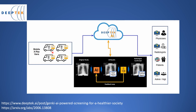The idea is that you have X-rays or mobile X-ray vans where X-rays of patients are taken. These X-rays are then uploaded onto a cloud where AI algorithms are running. The AI algorithms from DeepTek detect certain abnormalities present in these X-rays and then create an automated report. This report can then be viewed by a radiologist or physician who can confirm the finding and start treatment.